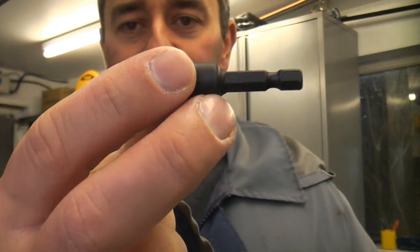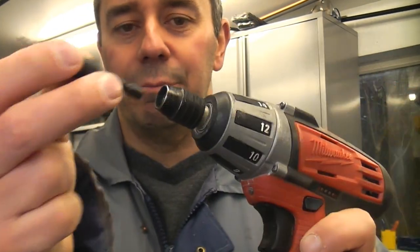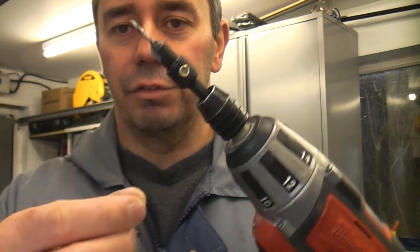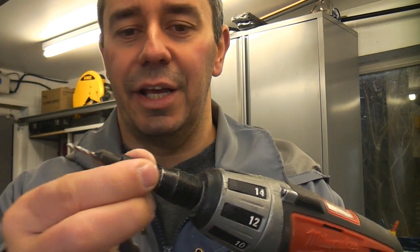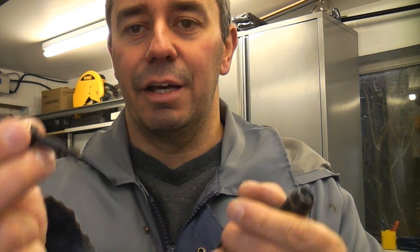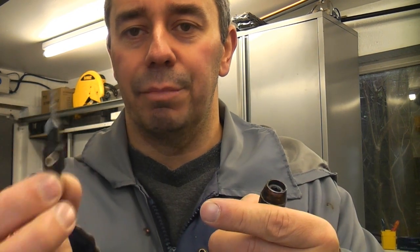These are designed to be used with the Trend Snappy system which makes them very quick when using them with a quarter inch hex chuck. Simply push it in and then it's gripped, and then you can release it again. That makes it extremely fast to change the bits over.